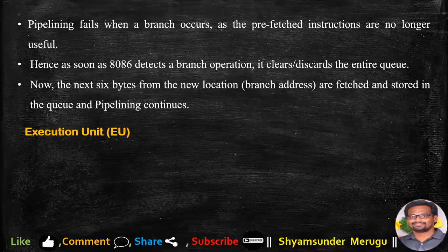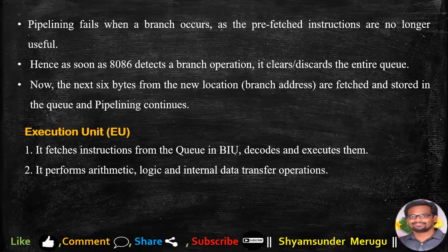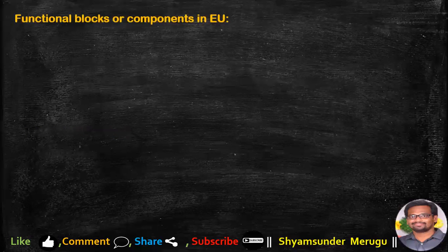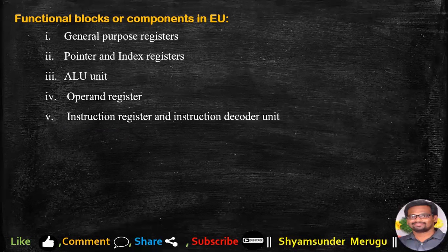Coming to the execution unit (EU). It fetches instructions from the queue in BIU, decodes and executes them. It performs arithmetic, logic, and internal data transfer operations. It sends request signals to the BIU to access the external module and operates with respect to T states, which are clock cycles. The functional blocks in EU are: general purpose registers, pointer and index registers, arithmetic and logic unit, operand registers, instruction registers and instruction decoder units, and flag registers.